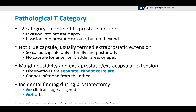Pathological T category. The T2 category means the tumor is confined to the prostate, and this includes invasion into the prostatic apex and into the prostatic capsule, but not beyond. Pathologists note there is really not a true capsule — it is usually termed extraprostatic extension. The so-called capsule is only laterally and posteriorly; there is no capsule for the anterior bladder area or the apex. An important concept: margin positivity and extraprostatic extracapsular extension are not the same. These observations are separate and you cannot correlate or infer one from the other.